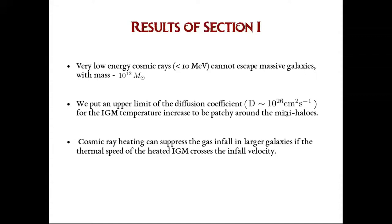Another important result of this paper is that the cosmic ray heating around massive galaxies can be to such an extent that the thermal velocity of the heated gas can exceed the infall velocity. In that case, the infall gets suppressed, and as a result, the cosmic ray heating acts as a negative feedback to the star formation of the galaxy.